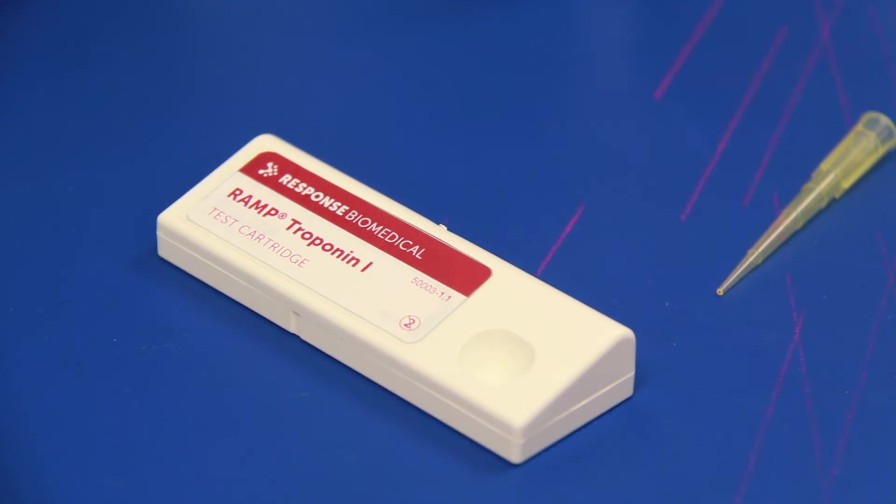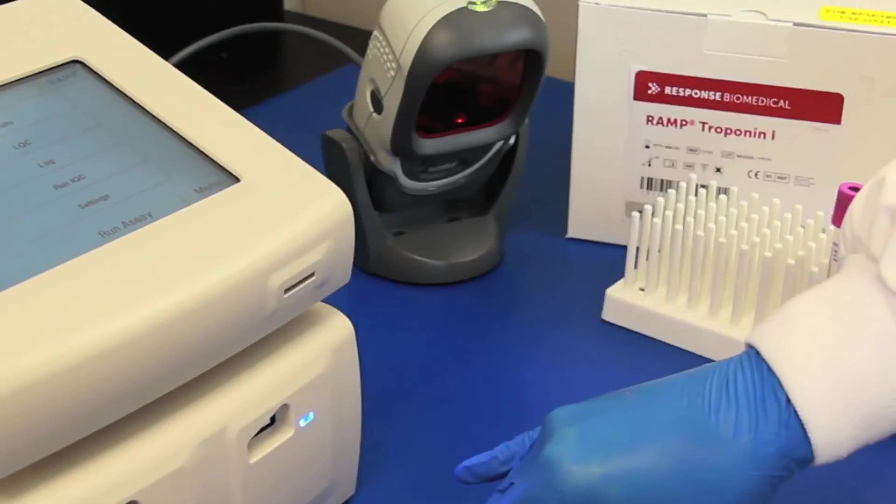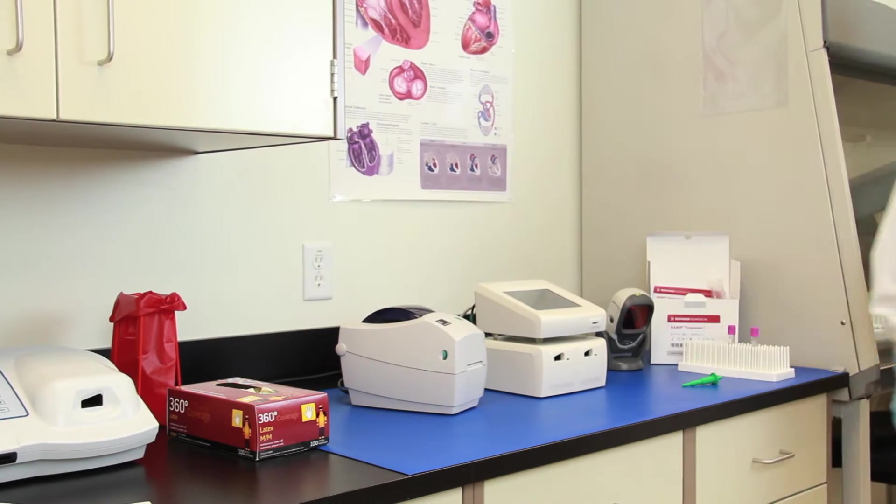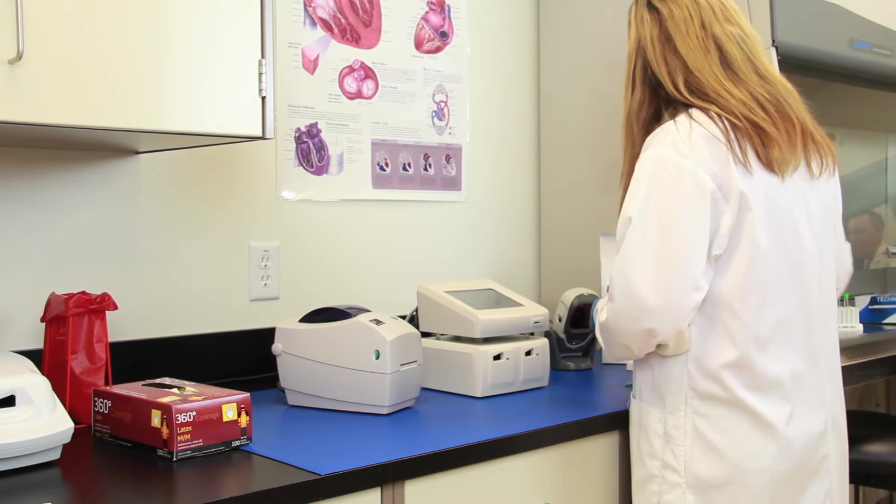The test cartridge is barcoded to tell the reader the lot number, name of the test, and which calibration file to access. There is no need to centrifuge samples, as the sample type for all RAMP cardiovascular tests is EDTA whole blood.